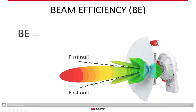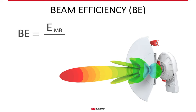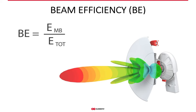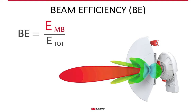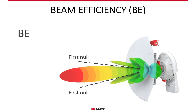Beam efficiency is the ratio of the main lobe energy to the total energy an antenna radiates. It tells you how much of the total signal energy is contained in the main lobe — as simple as that. The maximum beam efficiency value is 100%, which is the ideal goal. The smaller the beam efficiency is, the more side lobes an antenna has. Since antenna side lobes are the direct cause of problems in WISP networks, antennas with a lot of side lobes should be avoided at all costs.